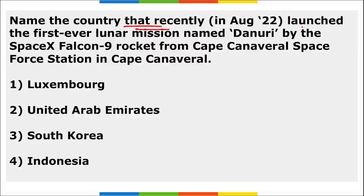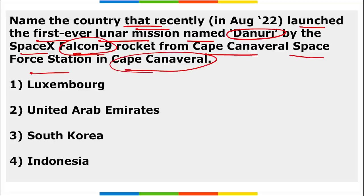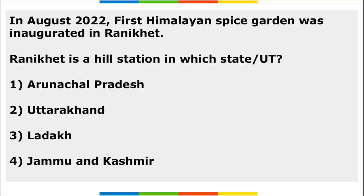Name the country that recently launched its first ever lunar mission named Danuri via a SpaceX Falcon 9 rocket from Cape Canaveral Space Station in the USA. The Danuri mission belongs to South Korea. The Danuri satellite was launched into space by the SpaceX Falcon 9 rocket.